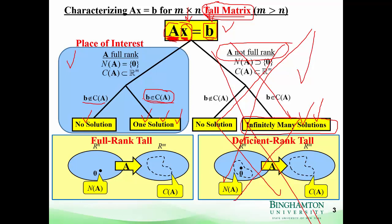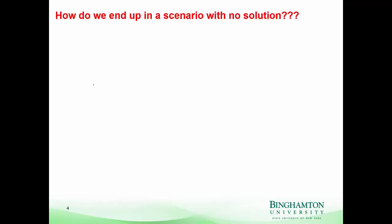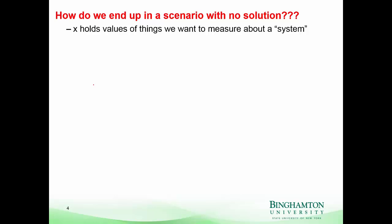So what goes wrong? How do we end up in a scenario with no solution? X holds the values of things we want to measure. We design a sensor system and take a lot of measurements — that's how we end up in the tall case. The more measurements we can take, the better off we're going to be. If we could measure perfectly without any measurement errors, we'd be all set.